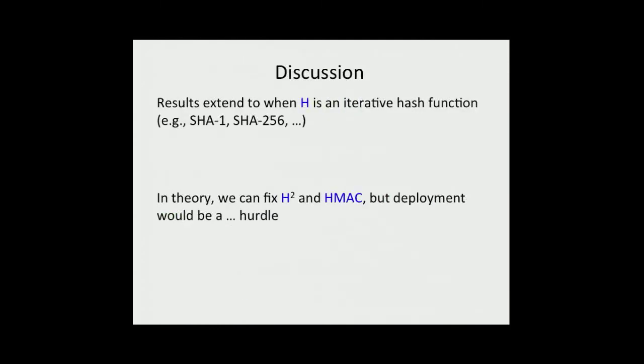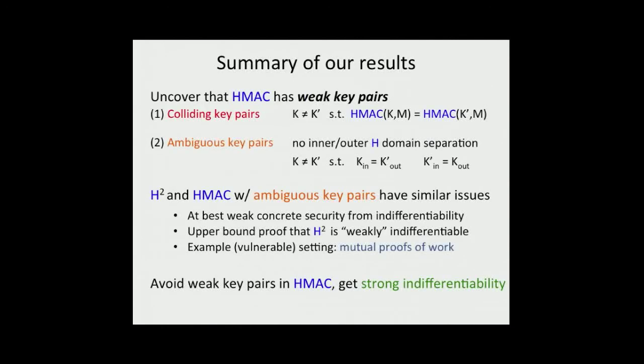Very briefly, all these results extend in the paper to when H is not a random oracle, but an iterative hash function. We know how to fix these two constructions from the point of view of indifferentiability, but that would have another host of issues. So I think I'm out of time, so I'll just leave the summary slide up here and be happy to take any quick questions. Thank you very much.